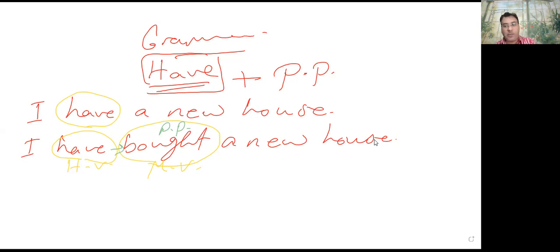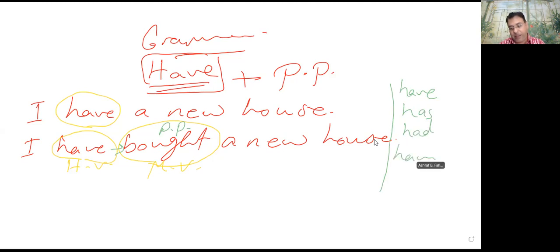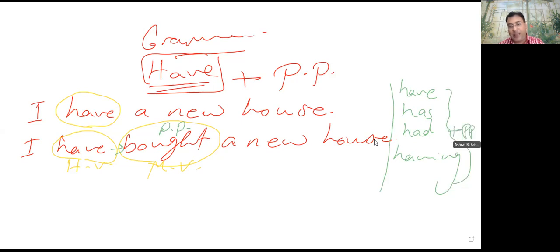So after the verb to have, or any of its forms — احنا ممكن نشوف have بأكتر من شكل: ممكن تكون have، ممكن has، had، having. المهم أي حاجة من دول، هيكون بعدها past participle.